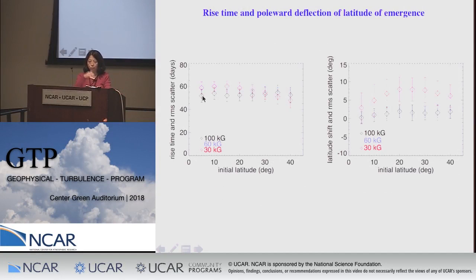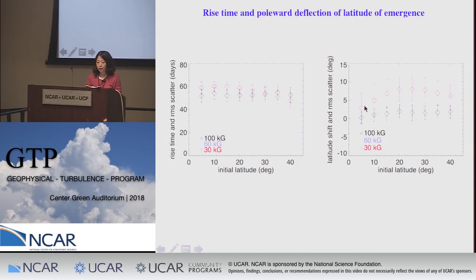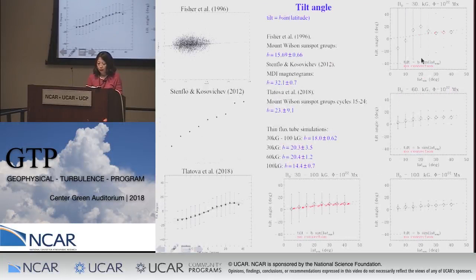From this thin flux tube model, rising tubes from the overshoot layer show a fairly uniform rise time ranging from 45 to 60 days over the range of field strengths and latitudes considered. They also all show a systematic forward deflection of the emerging latitude compared to the initial latitude, due to the Coriolis force acting on the rising tube, with weaker field strength cases showing slightly more systematic forward shift.